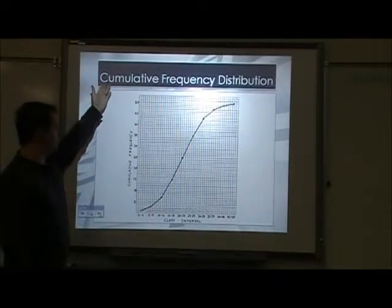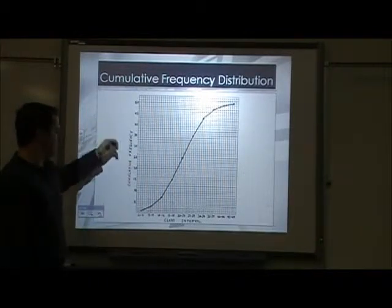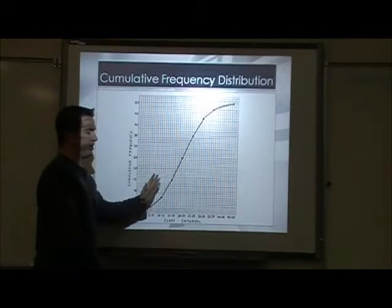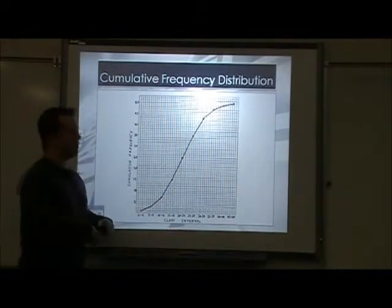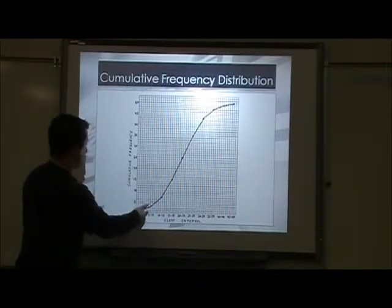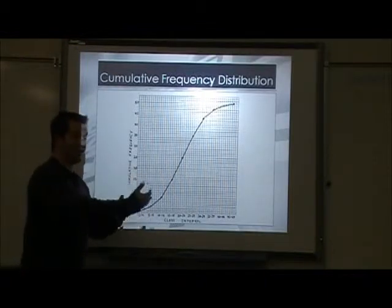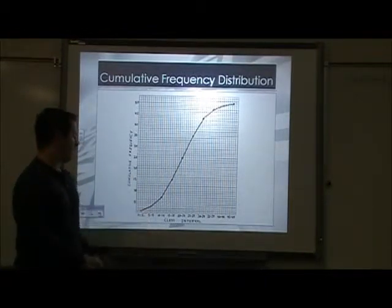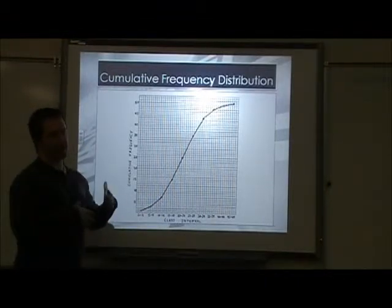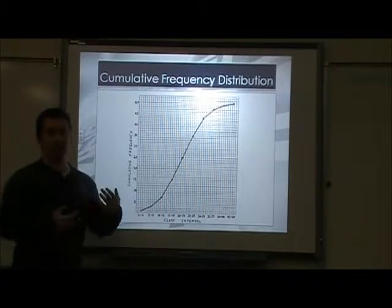Here's another type of frequency chart — this is a cumulative frequency. We're using our midpoints of our data set, plotting the points, and then connecting the dots. You find your midpoint from 0 to 4, which is 2, and put a dot there based on how many things you have in that data set. Go to 5 to 9, put another dot. Then 10 to 14, put a dot, and then you just play connect the dots — it shows you a line graph of what your data looks like.